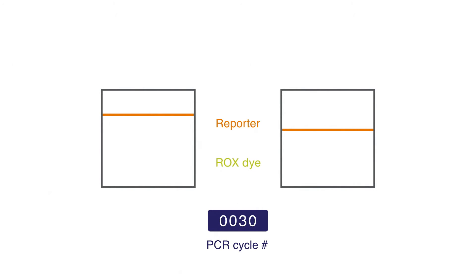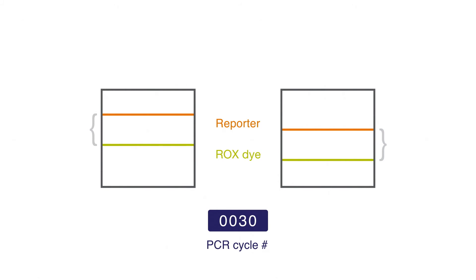Relatively speaking, these measurements are incorrect. Fortunately, we also have ROX dye in these same two wells, and like the reporter, it's also being measured. And look — it's actually shadowing the reporter. In other words, the system inconsistency is affecting ROX to the same degree that it's affecting the reporter. Importantly, the instrument will collect these paired measurements in every well at every cycle, and then divide every reporter measurement by its corresponding ROX measurement at the end of the run.